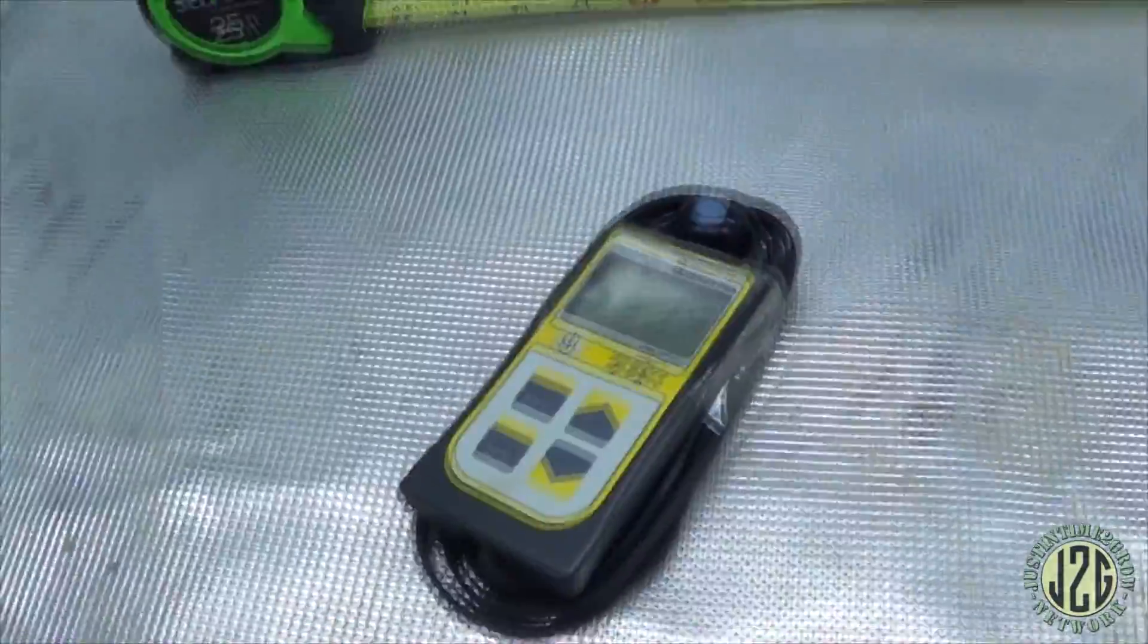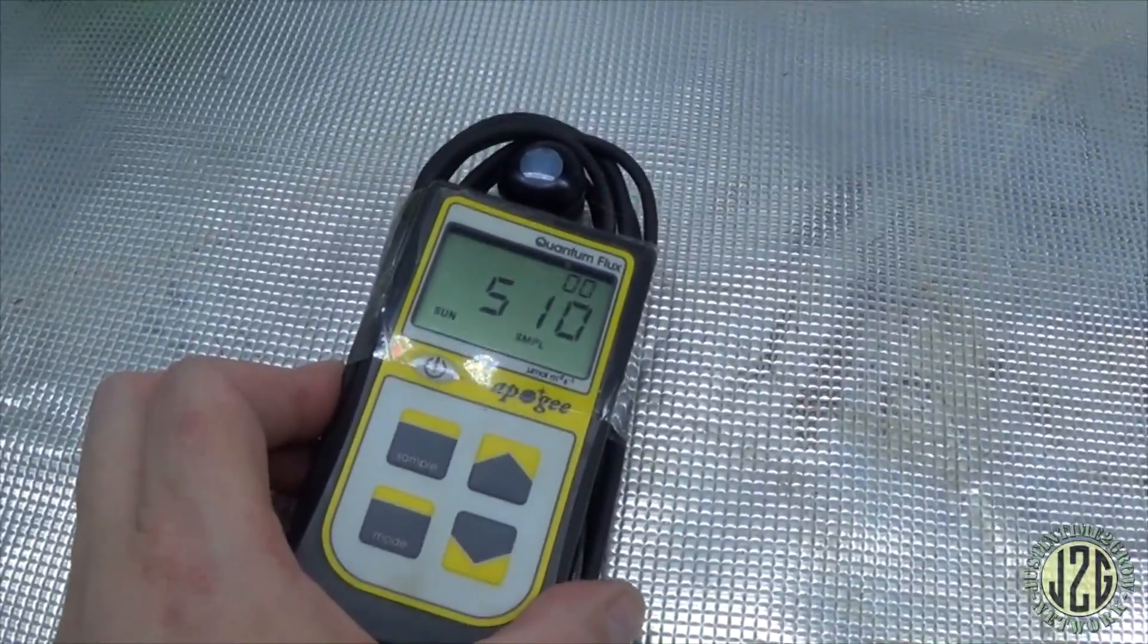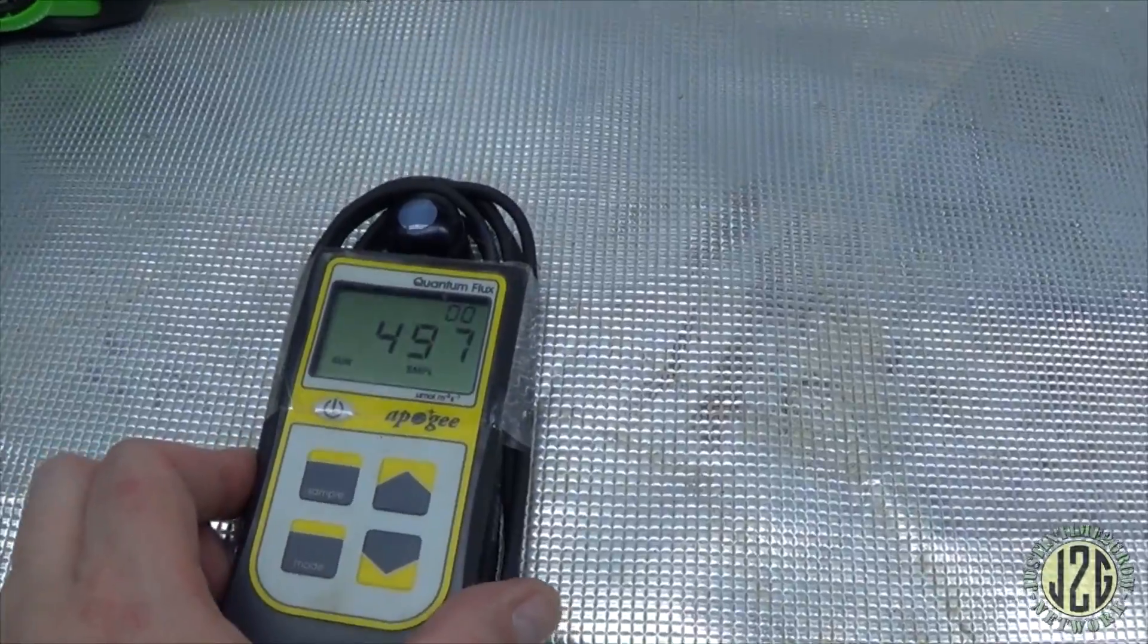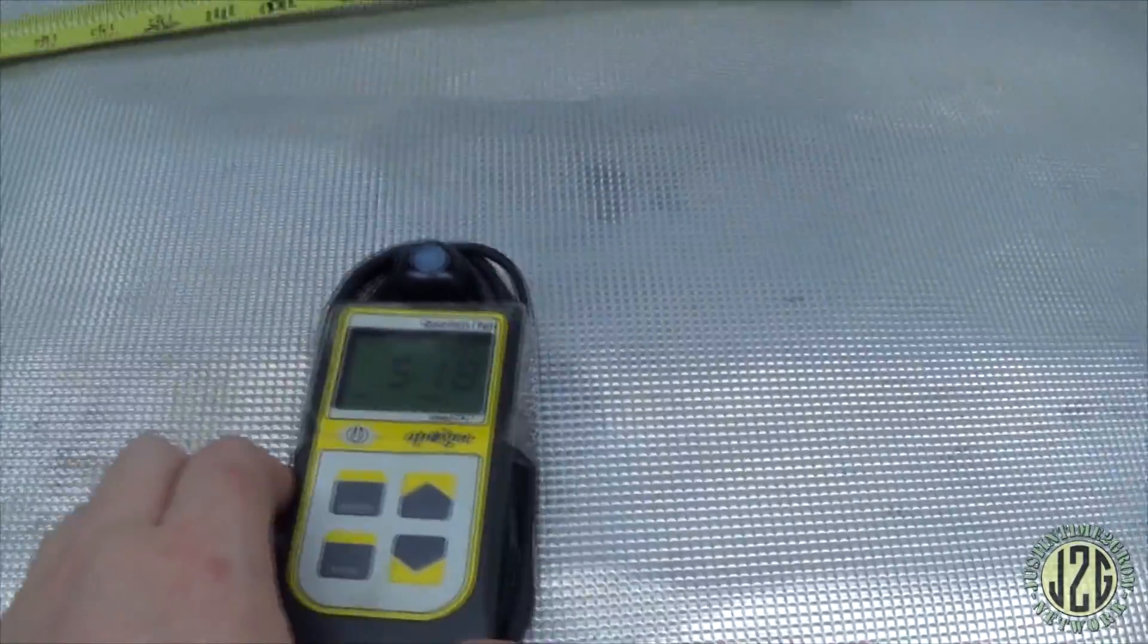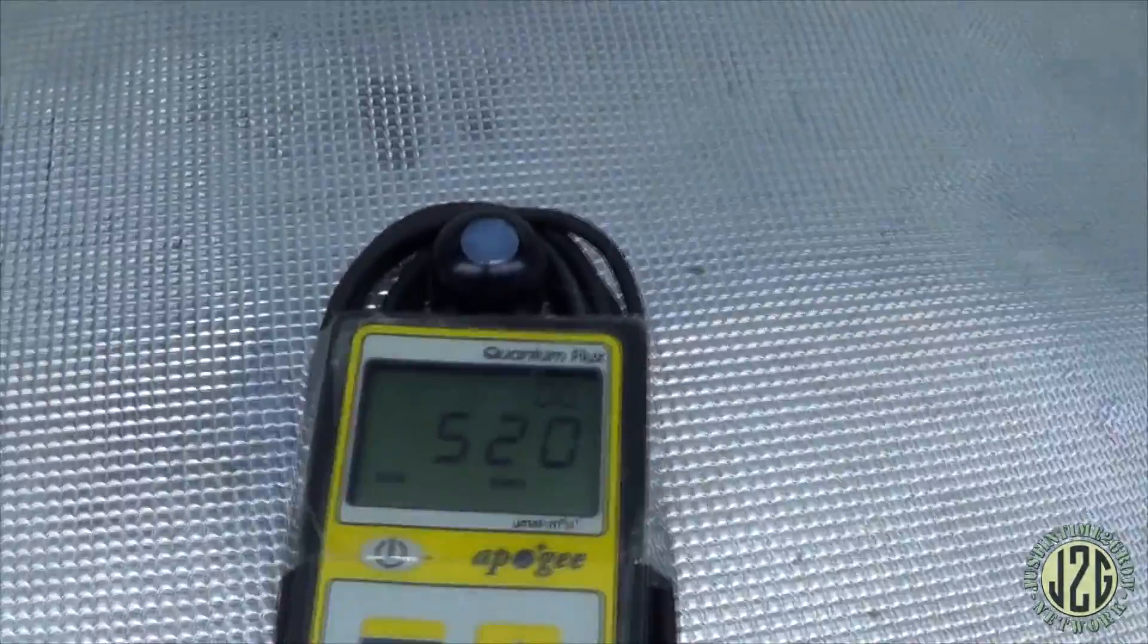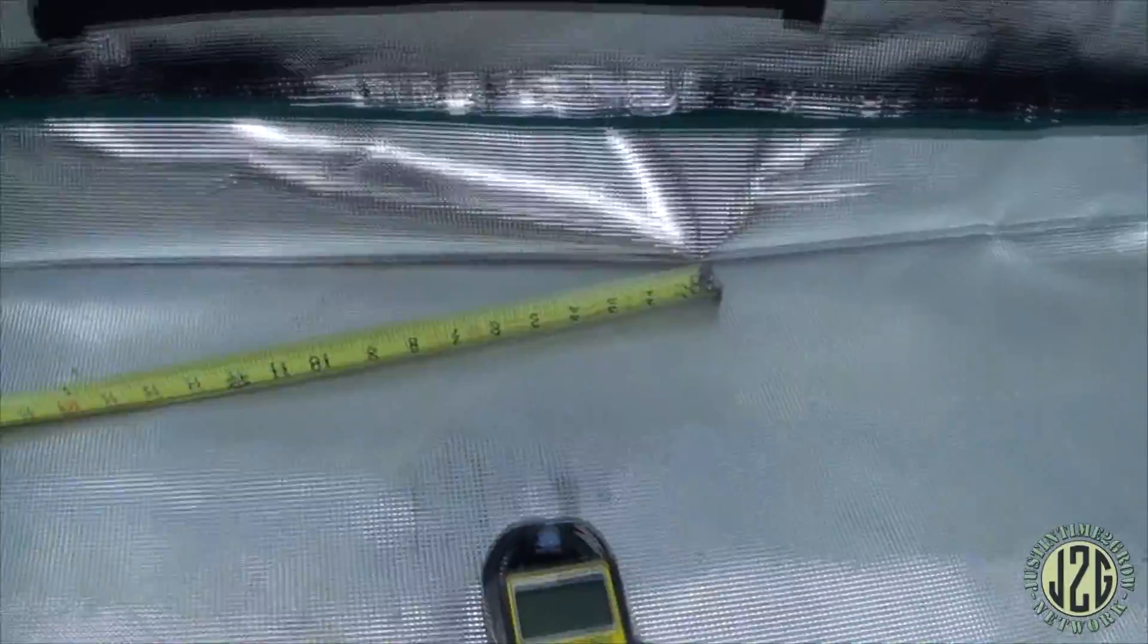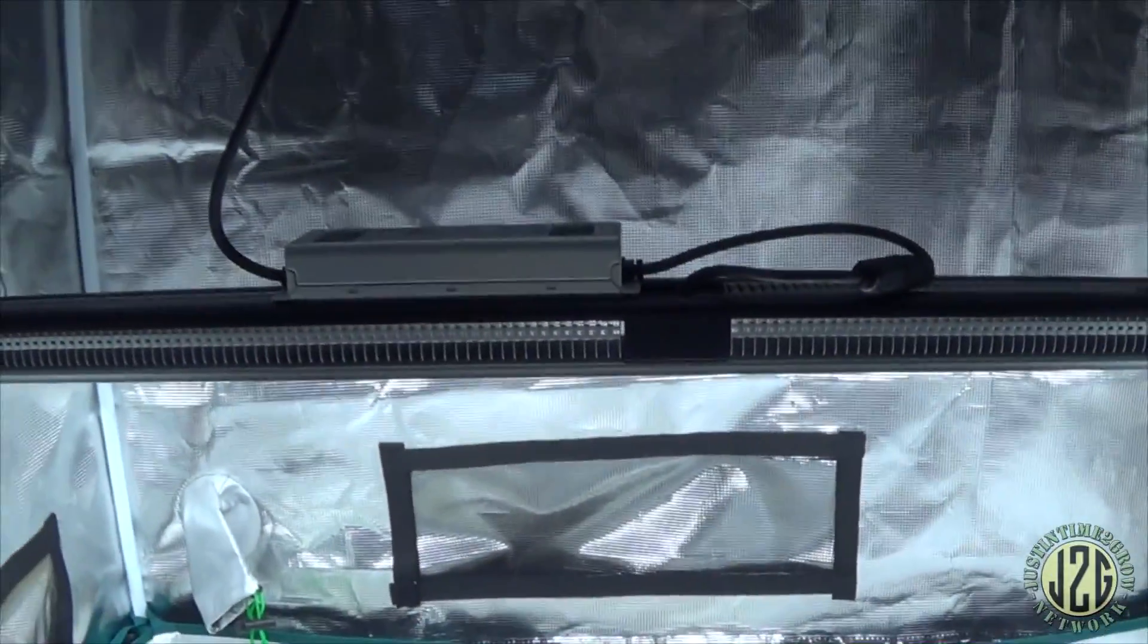I'm telling you man, this light is going to kill it in a 2x4 tent. This light is going to kill it. You're going to get excellent results at 20 inches. You go down to 18, you're definitely going to be in the 500s all around this tent, which is absolutely excellent. I'm going to go ahead and do that now, I'm going to drop this down a couple of inches here.